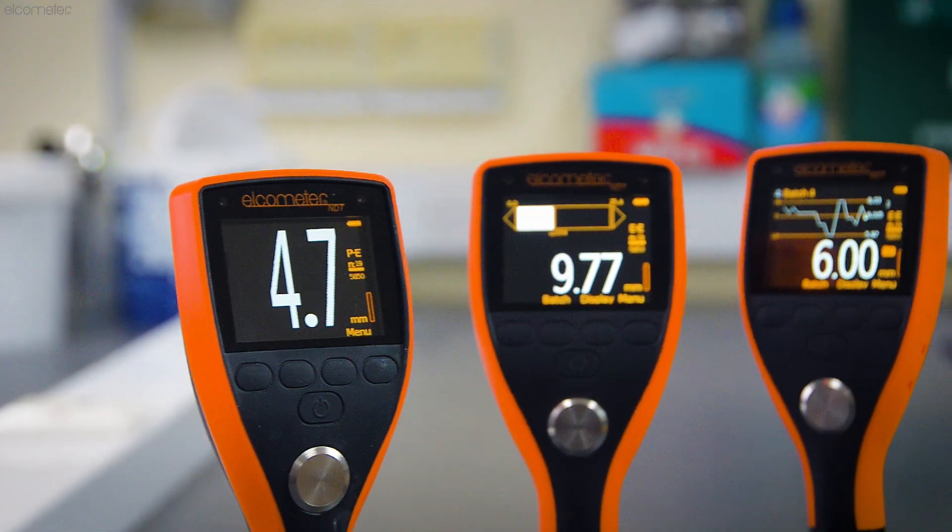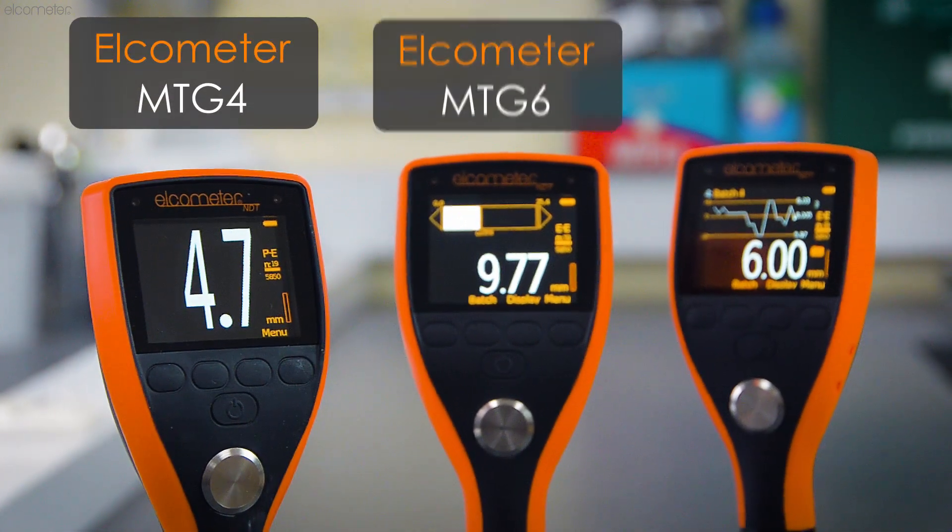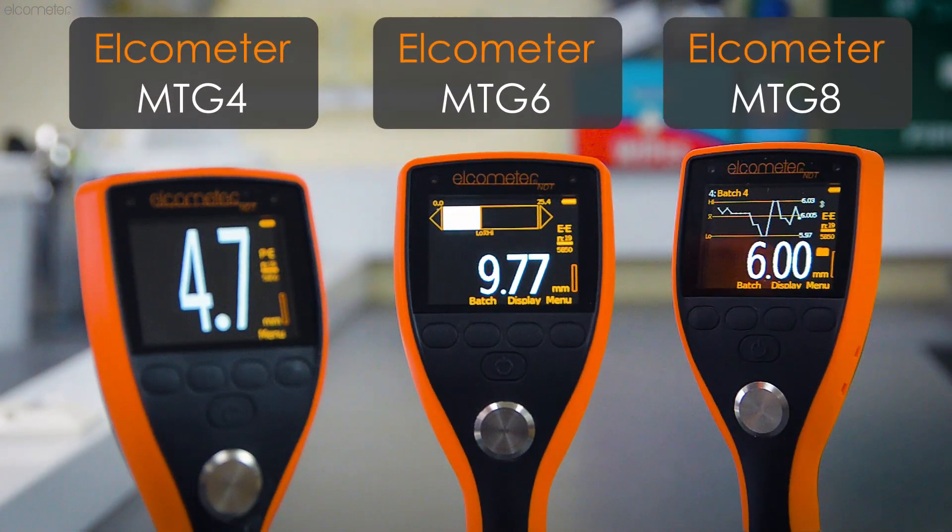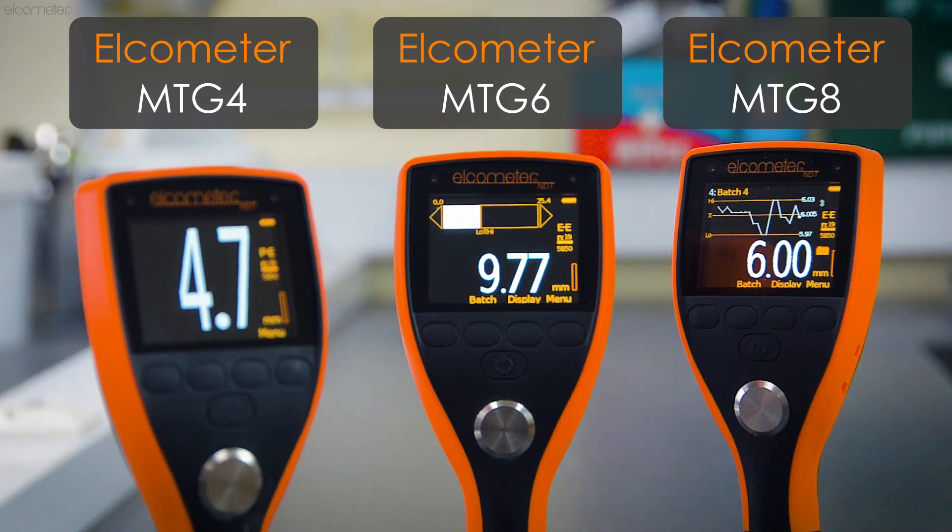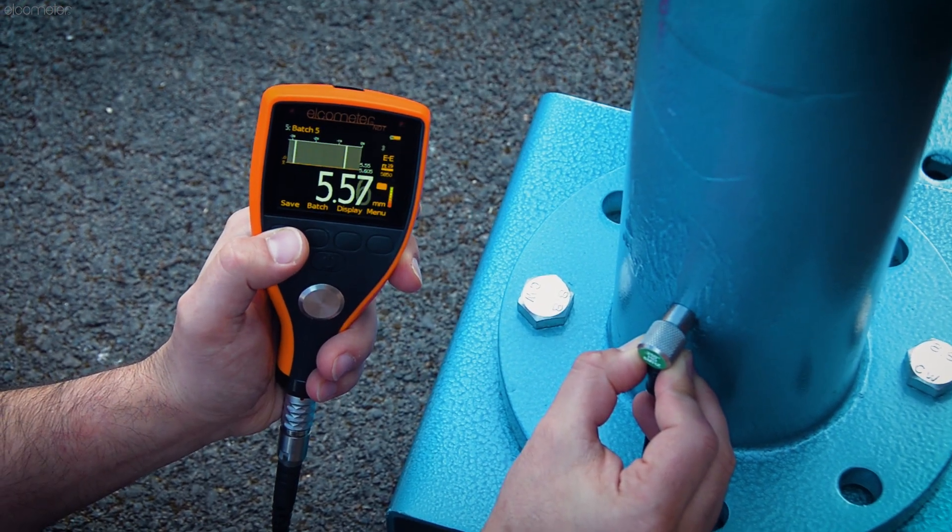That's where the Elcometer MTG4, MTG6 and MTG8 ultrasonic material thickness gauges come in, and they're discussed in another video.